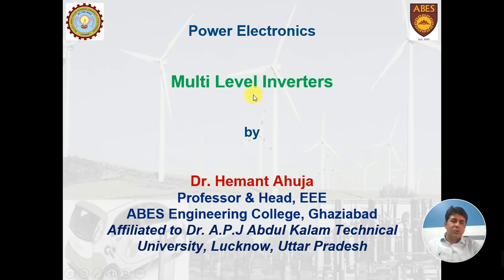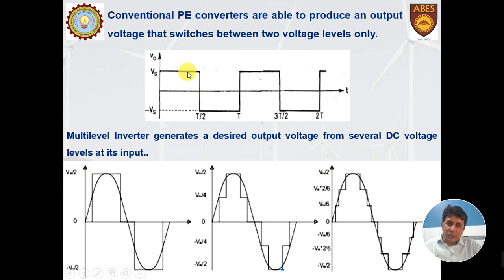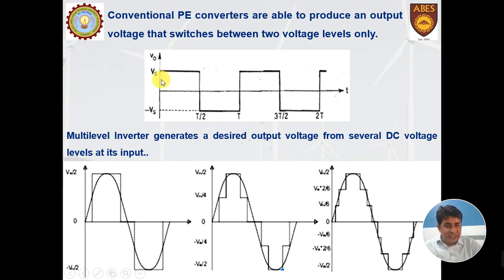Before entering into those topologies, let us first see what is the meaning of multi-level. In a conventional power electronic bridge inverter — a single-phase bridge inverter — the output has two levels: one is Vs and another is minus Vs. There is no third level available. By switching thyristor pairs T1-T2 we get Vs, and by switching T3-T4 we get minus Vs. So there are only two levels available.